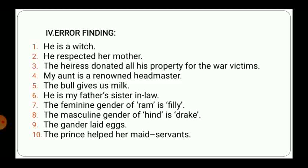In the fourth exercise, there are ten sentences given and you have to find the error, then write the correction in the blank provided. For example, the first sentence says 'He is a witch.' He is used for male and witch is used for female, so there is a mismatch — the correction is 'He is a wizard.' Then 'He respected her mother' should be 'She respected her mother.' 'The heiress donated all his property for the war victim' — heiress should be changed to heir. 'My aunt is a renowned headmaster' — aunt should be changed to uncle.